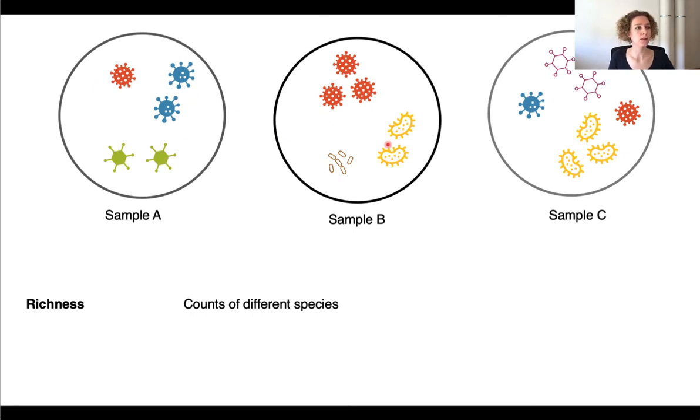Sample B three red ones, two yellow, one brown one. So we can say sample A is more even than sample B, which means it is just numerically more equal in the number of species. And that is what we call evenness, so the distribution of species.